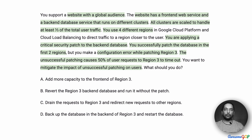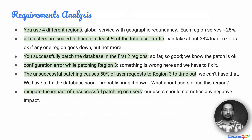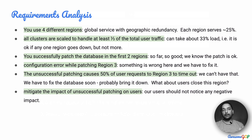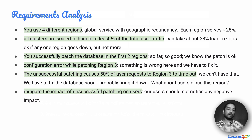There are a number of interesting points in this question. Let's go directly into the analysis of the requirements. This is a global application with four different regions, so there is considerable geographic redundancy available. Each region now serves about 25% of the load. All clusters are scaled to handle at least one-third of the total user traffic, which means it can take up to 33% load — in other words, it is okay if one region goes down and we reroute traffic to the other regions. But only one region; we can't allow for more than one.